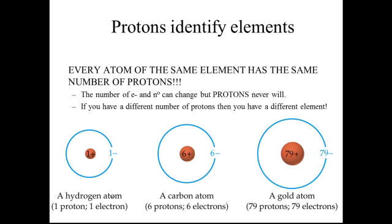Every atom of the same element has the same number of protons — protons have to stay the same. However, electrons can come and go. We'll talk about how they bond and electrons coming and leaving. And we'll talk about the number of neutrons differing — we can have isotopes: same element, but different number of neutrons. So neutrons could differ, electrons could differ, but protons have to be the same.